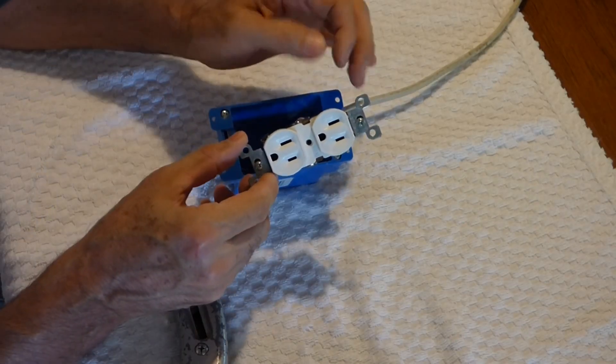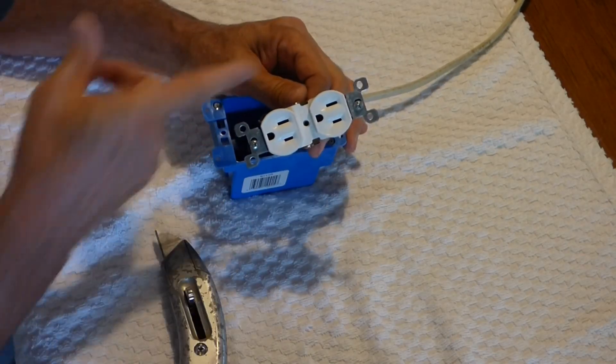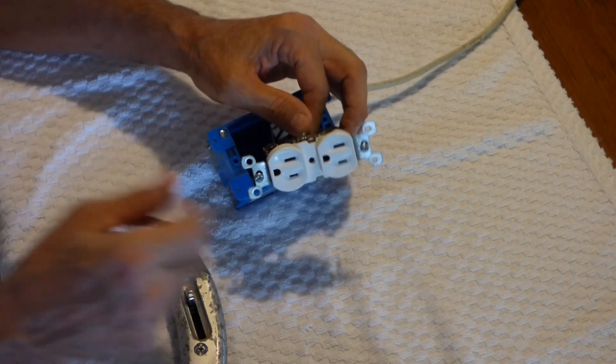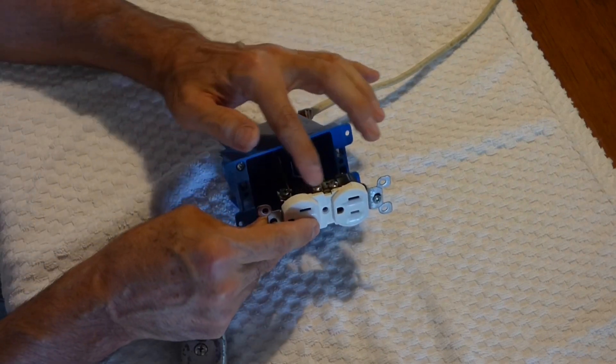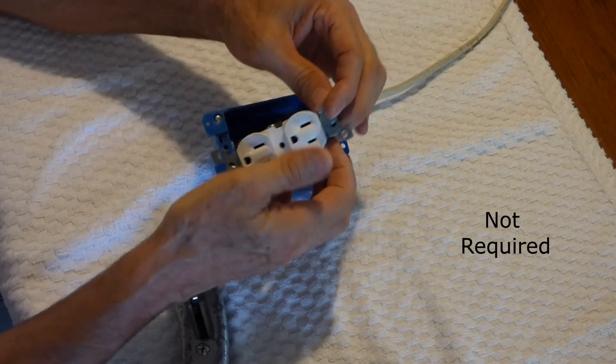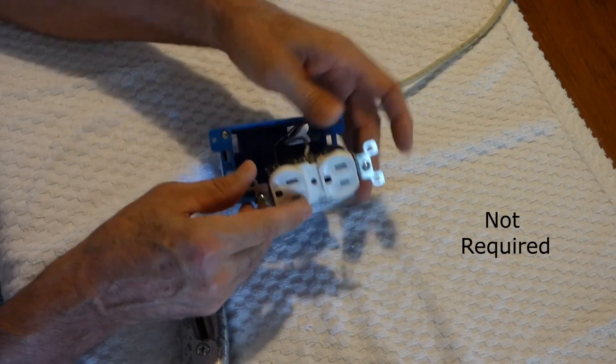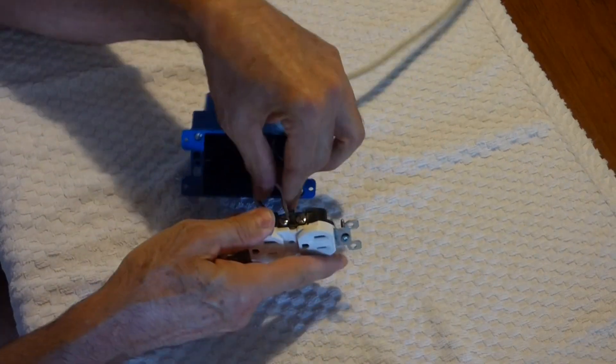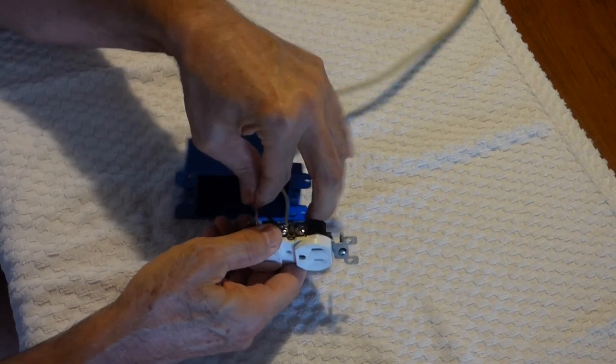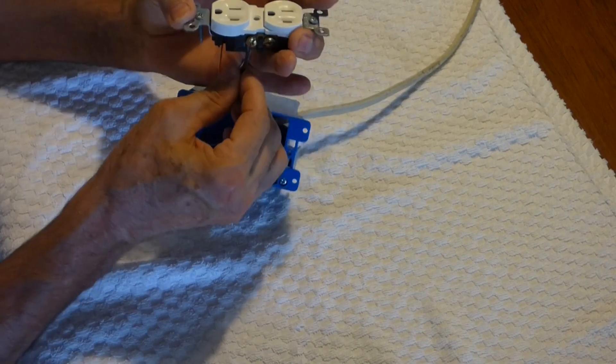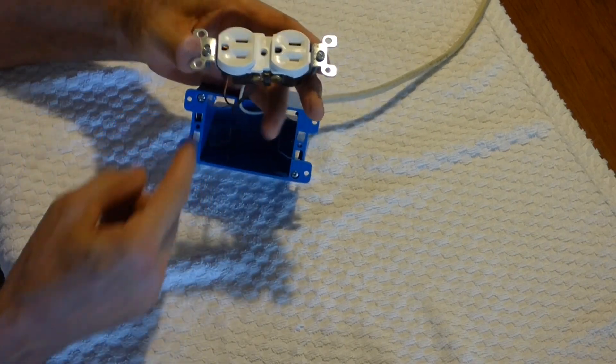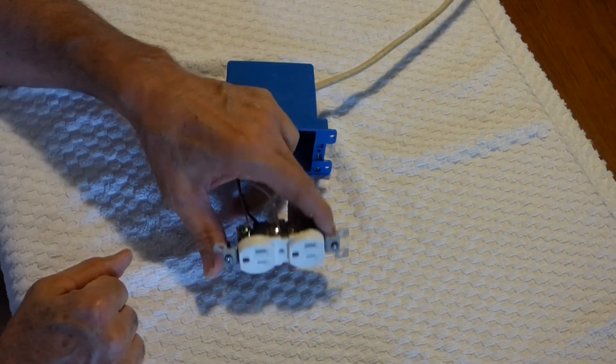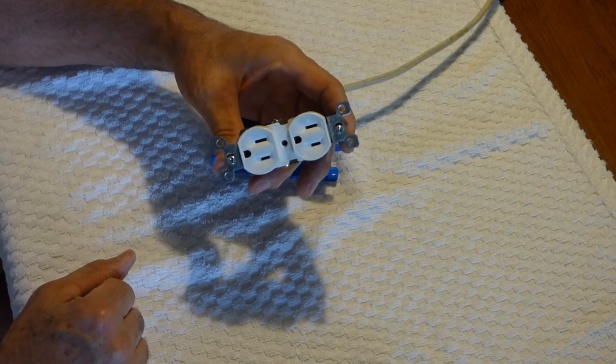Some electricians also, after they get these wired like this, they like to take electrical tape and tape around these connections to ensure there's no contact. You want to make sure these wires are tight, not loose at all. If you get a loose wire, you can get an overheating problem, and it can also cause a fire.